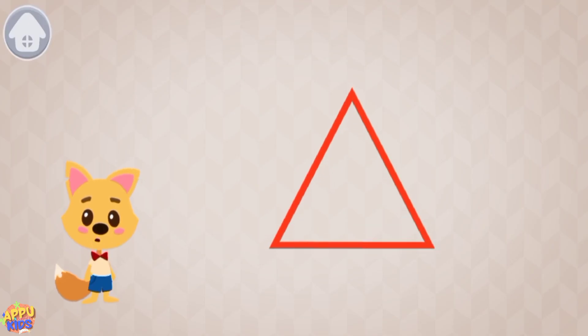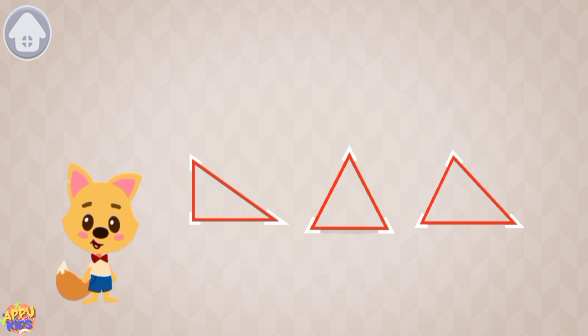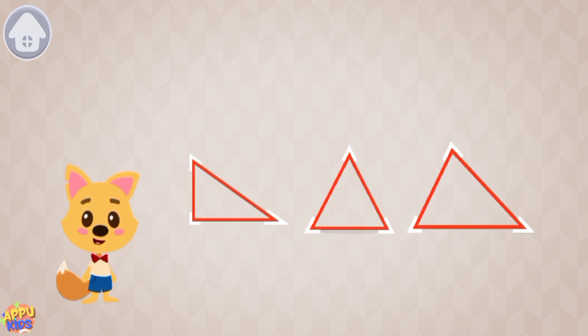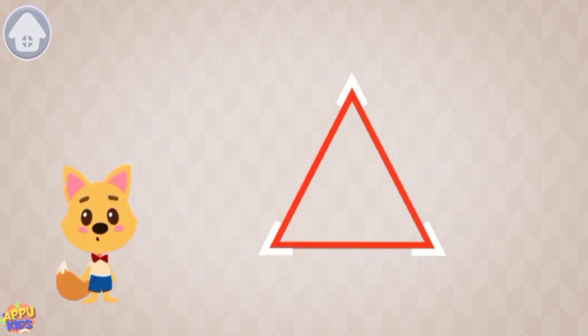This is a triangle. The triangle has three angles: one, two, three. The length of the triangle's sides can be equal or different.